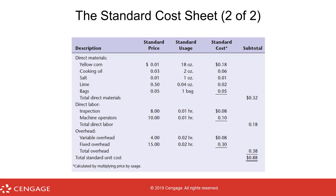Adding it all together: total direct materials equal $0.32 per unit, total direct labor is $0.18 per unit, and total overhead is $0.38 per unit. The total standard unit cost in this case is $0.88 per unit. You can apply this to any number of things in manufacturing.